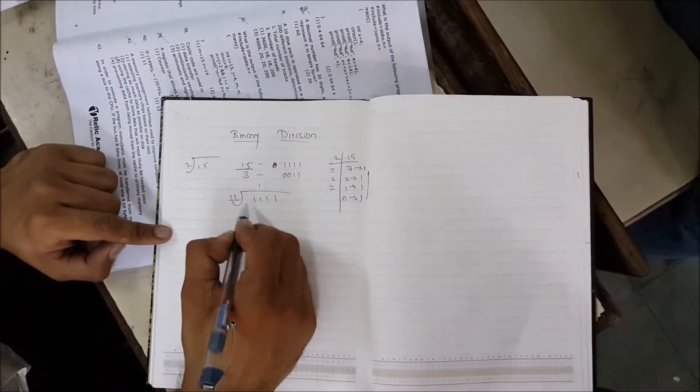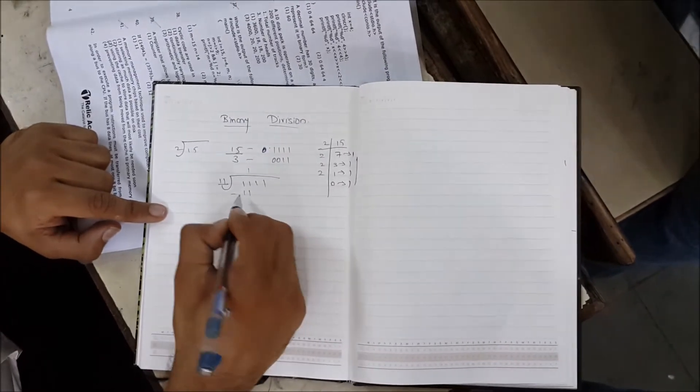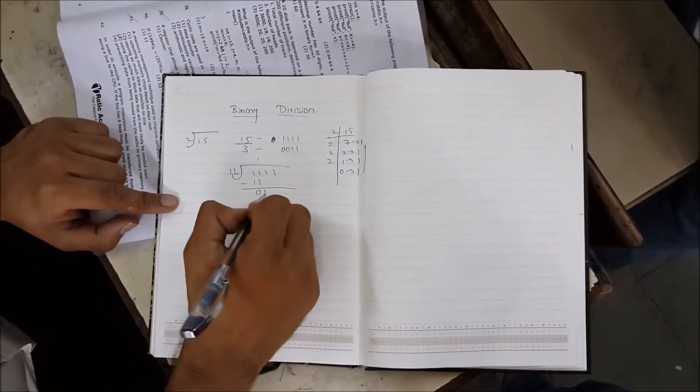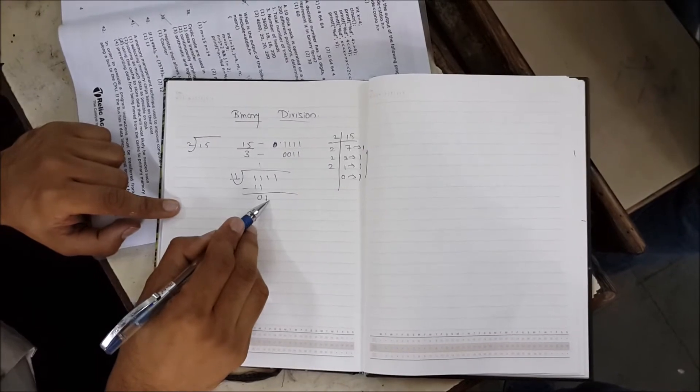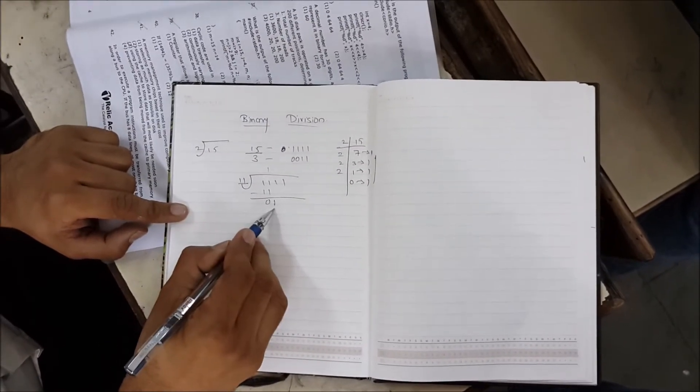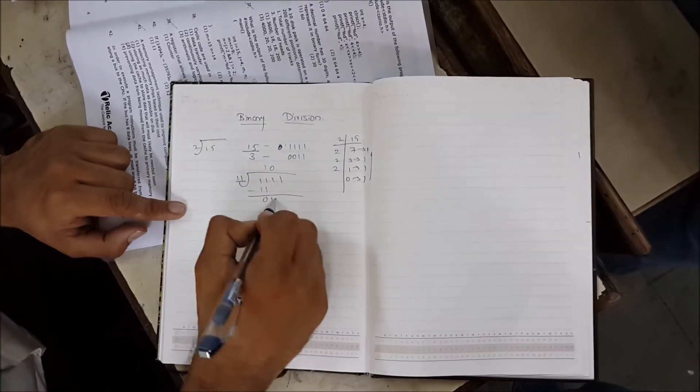So 11 into 1 is 0. Take this one down. Will it divide? You have two ones here but only one one there, so take a 0 and bring this one down.